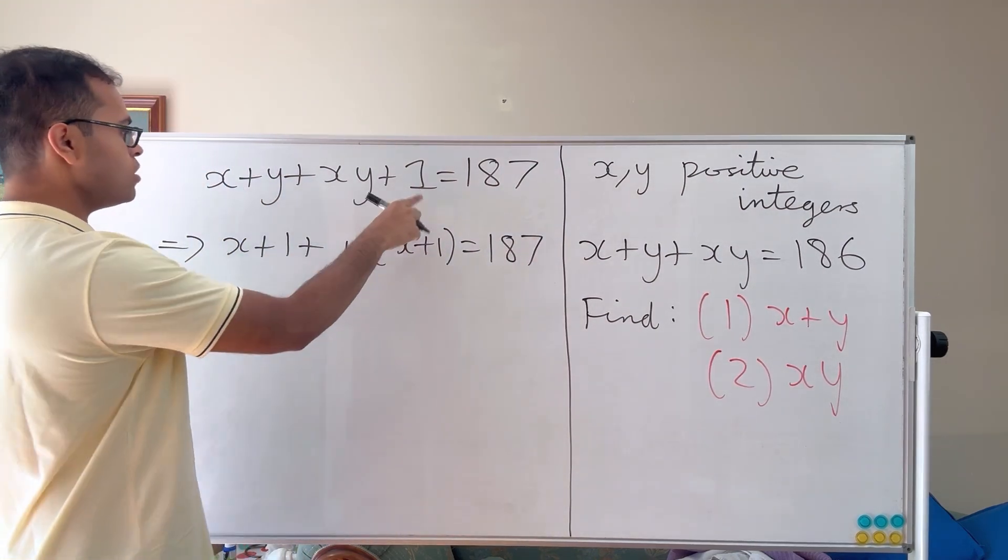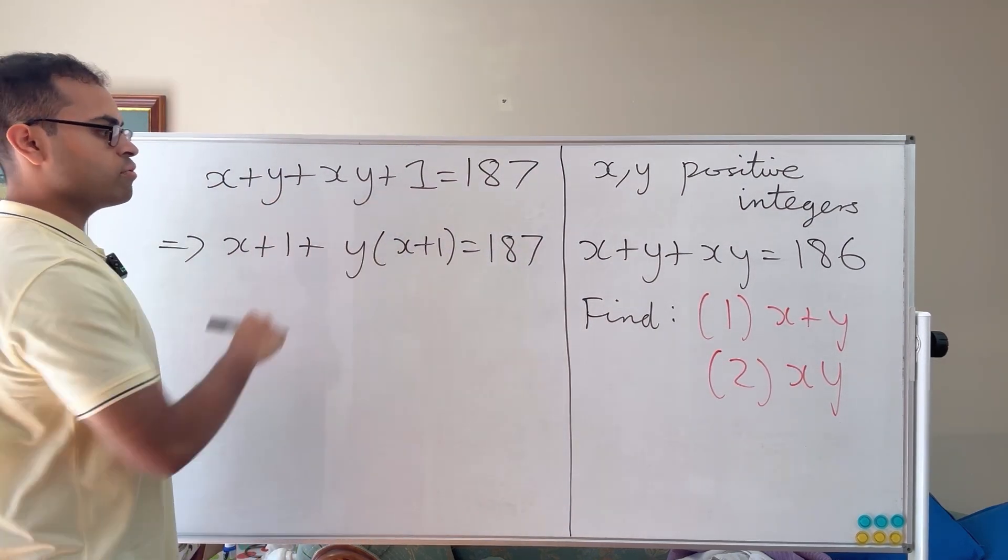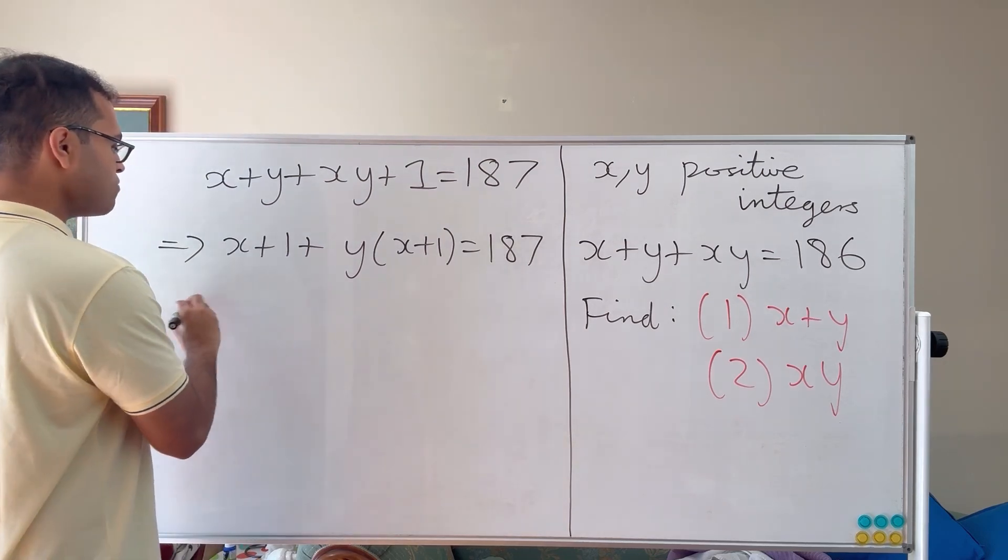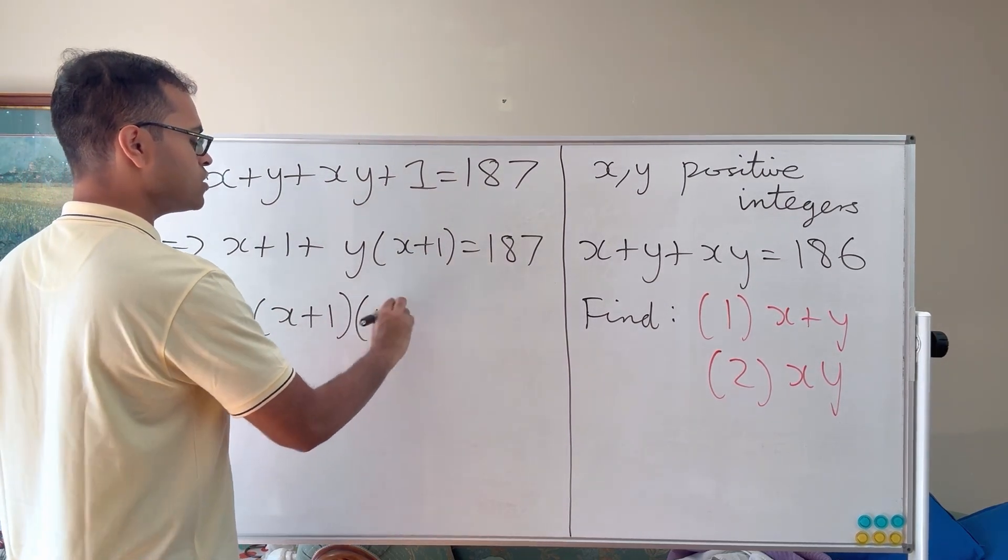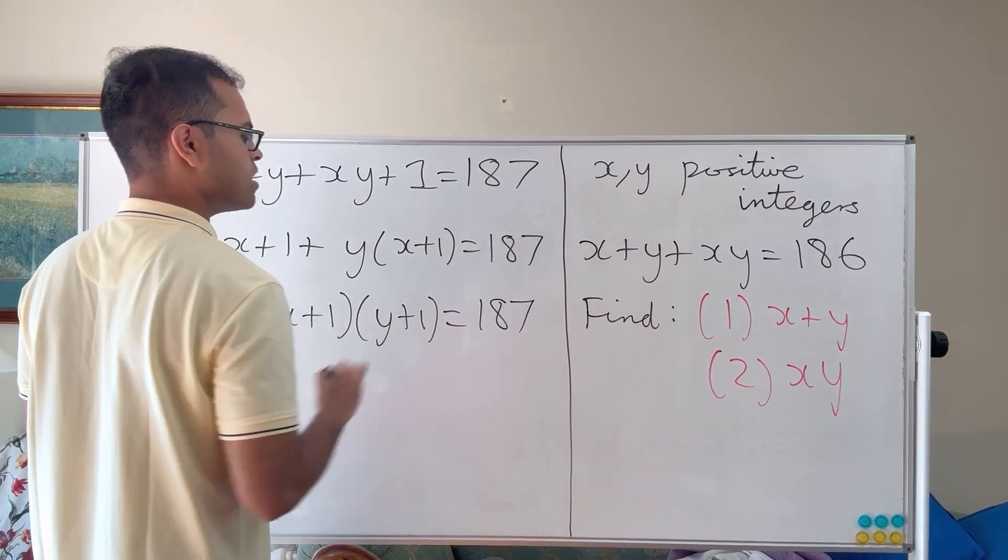I literally just put the one to this side and factor the y from the y plus xy. And now we can factor x plus 1 from this and get x plus 1 times y plus 1 is equal to 187.